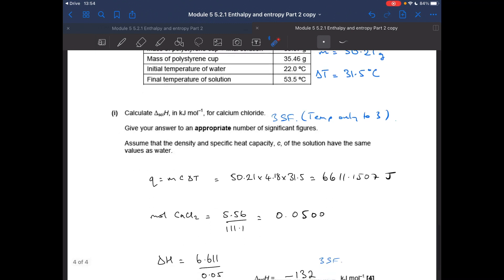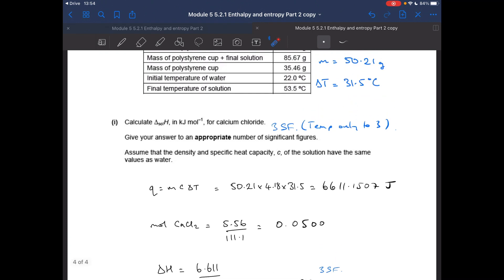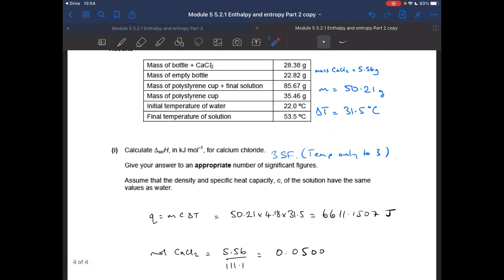So the delta H is the Q value in kilojoules, because we've got to give our answer in kilojoules per mole, the Q value in kilojoules divided by the moles, 132, but it needs a minus sign because it's exothermic. How do we know it's exothermic? Because the solution got hot.